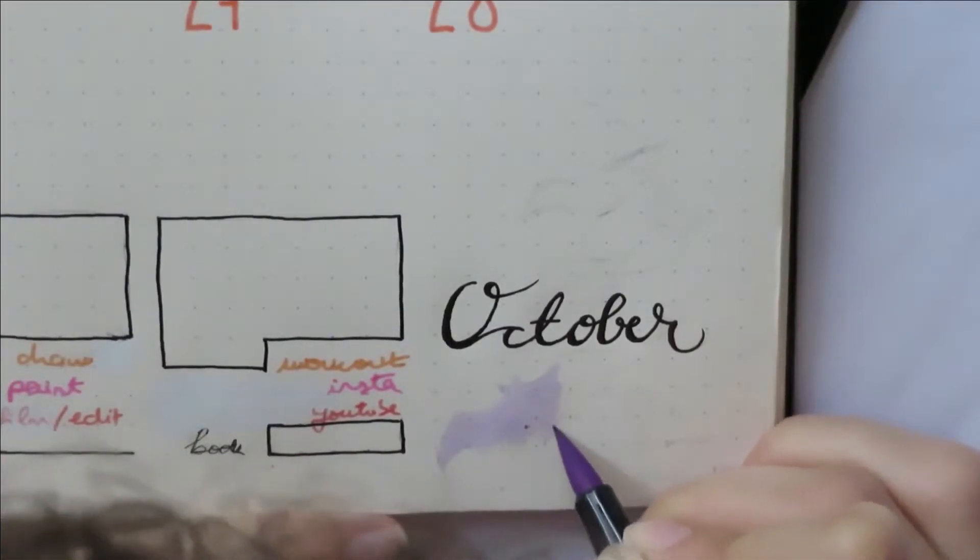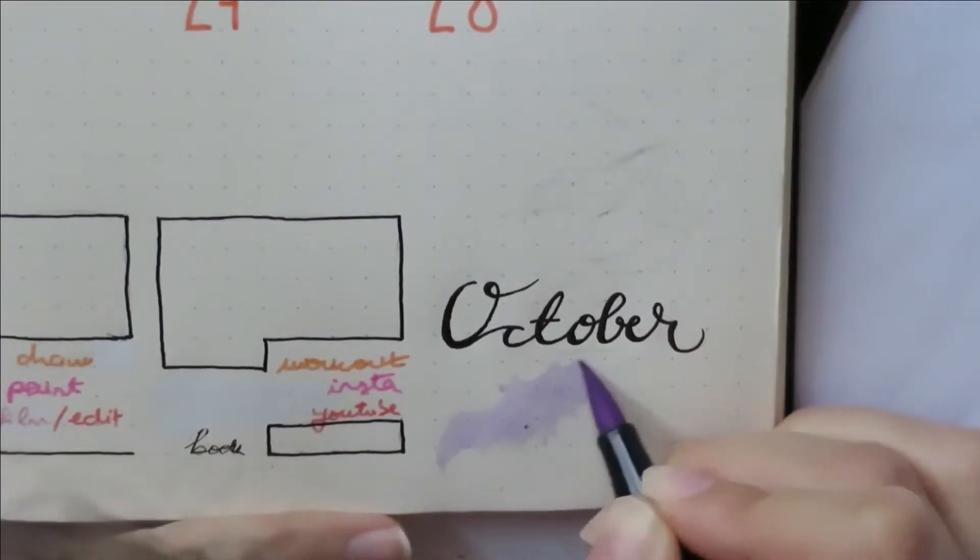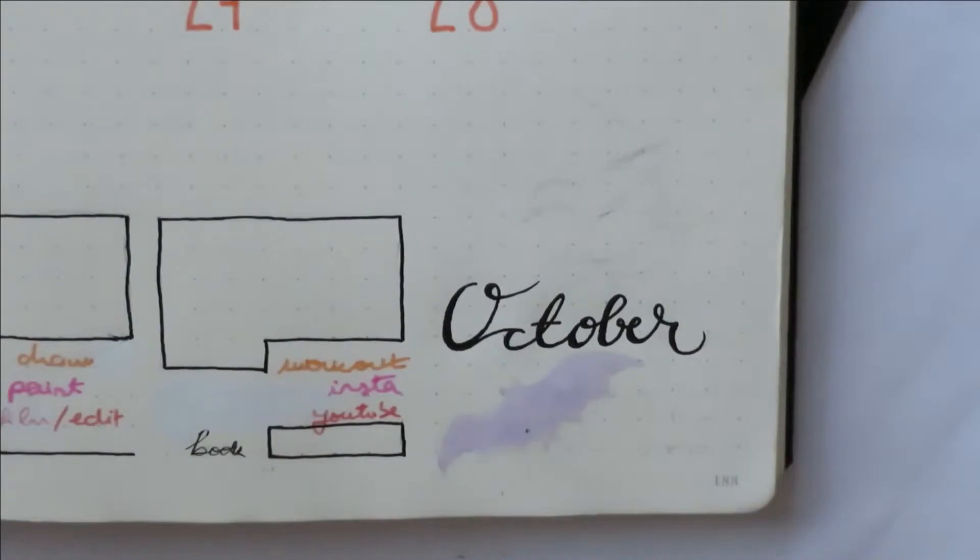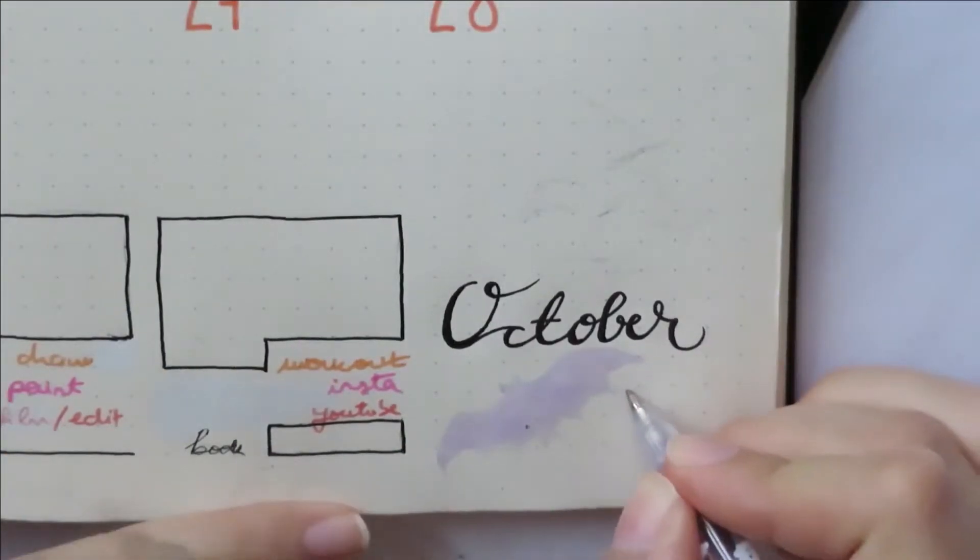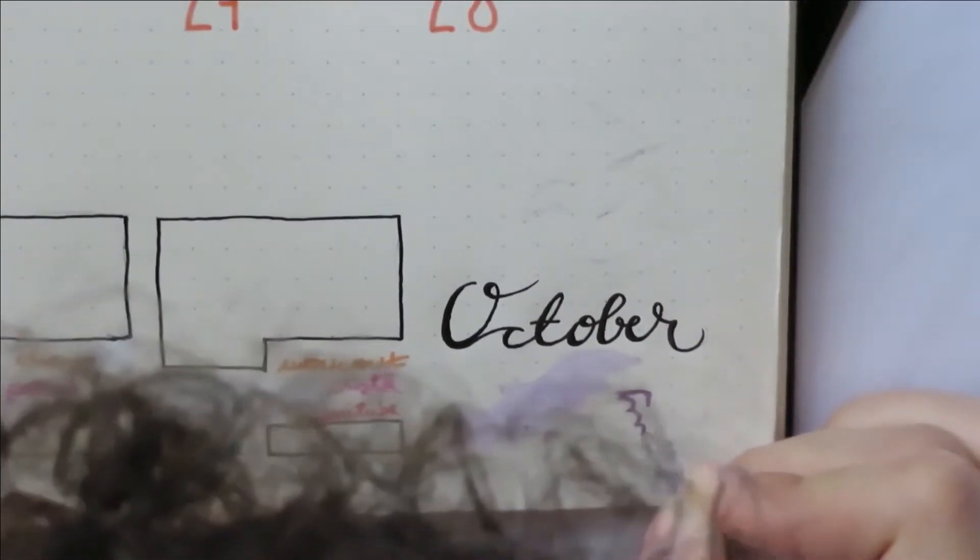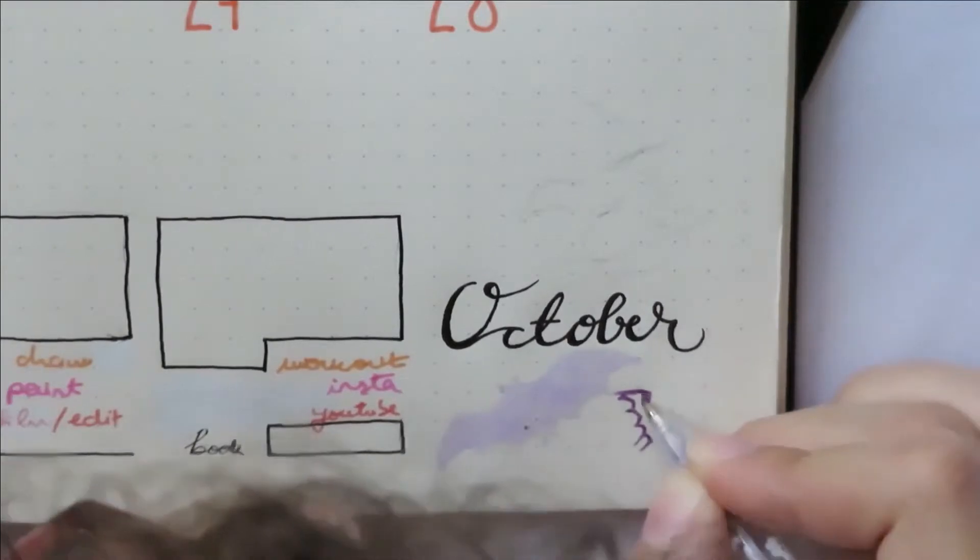I prefer it this way. To me the bullet journal is very much an organizing tool, so whatever is left I decorate. So I started off by just doing a calligraphy of the month's name that I kind of copied and found online.